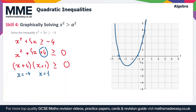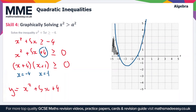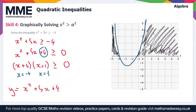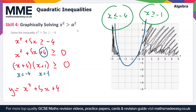Now we need to find the set of values that satisfy the inequality. We've drawn the graph of y equals x squared plus 5x plus 4 and we're looking for y values greater than or equal to 0. These occur to the left of x equals minus 4 and to the right of x equals minus 1 — I'll shade those regions in. So there are two solutions: x less than or equal to minus 4, and x greater than or equal to minus 1. You always get two separate solutions rather than a range when the inequality is in the form x squared greater than a squared.